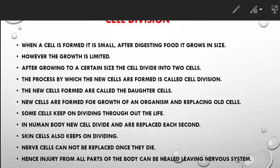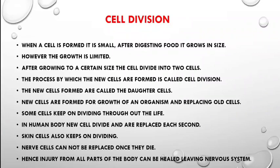These new cells which are formed are called daughter cells. New cells are formed for the growth of an organism and for replacing old cells. Old cells die, get some injury, or stop working, so they need to be replaced by new cells. That is why cell division takes place.